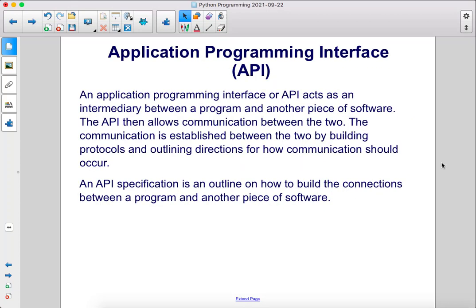An Application Programming Interface, or API, acts as an intermediary between a program and another piece of software. The API then allows communication between the two. The communication is established by building protocols and outlining directions for how communication should occur. An API specification is an outline on how to build the connections between a program and another piece of software.